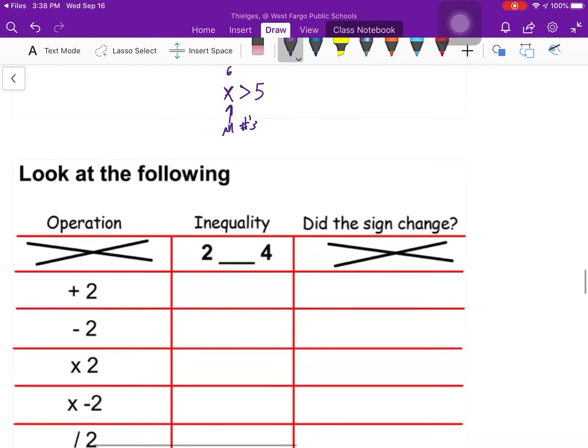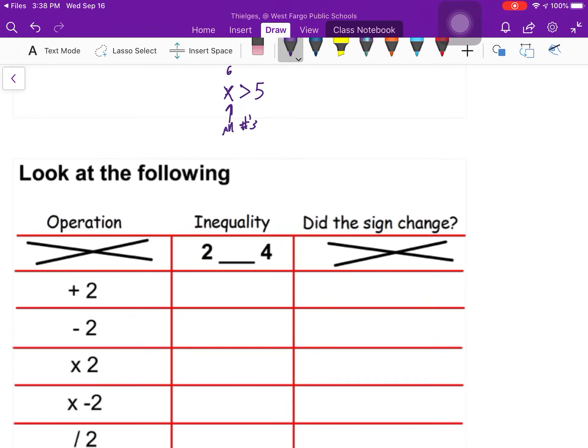One little caveat to this. First of all, by the way, what inequality would I fill in here? I believe 2 is less than 4. Let's say I add 2 to both sides, and I would get 4 and 6. Inequality is still that way. So did my inequality or my sign change? Nope. Let's say I subtract 2 from 2. I'm going back to the very original. So 2 minus 2, I get 0. 4 minus 2, I get 2. Does the sign change? Nope. Let's say I multiply by 2. 2 times 2 is 4. 4 times 2 is 8. Does the sign change? No.